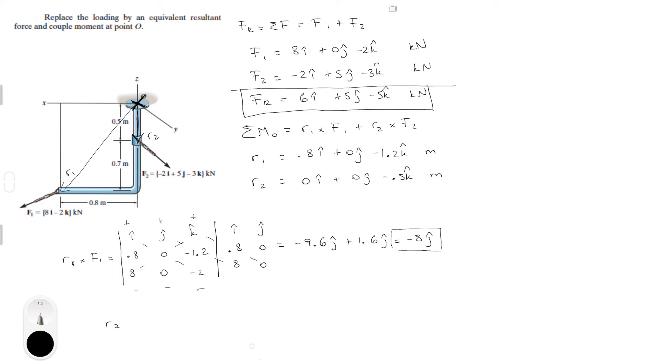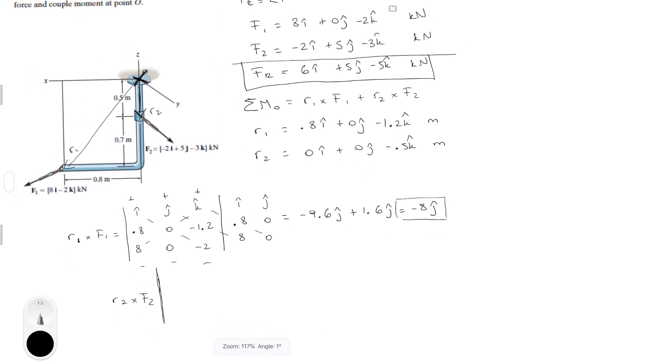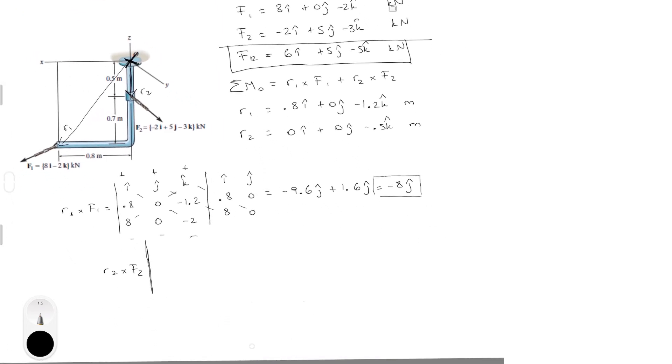Let me do my second matrix right here. I don't like working so close to the bottom of the screen. i, j, k. Now R2 is 0, 0, minus 0.5. And F2 is equal to minus 2, 5, and minus 3. Rewrite first and second column.